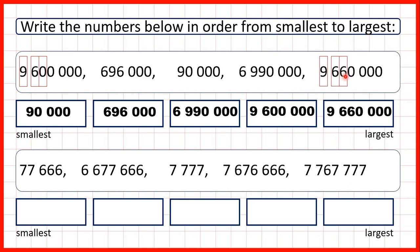And so our largest number is 9,660,000. Now we have 77,666; 6,677,666; 7,777; 7,676,666; and 7,767,777.